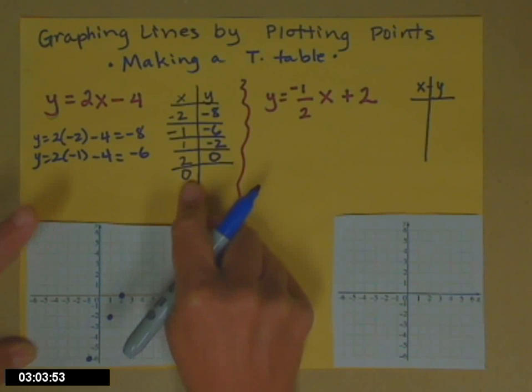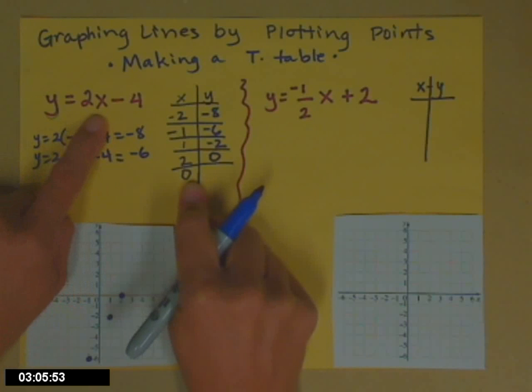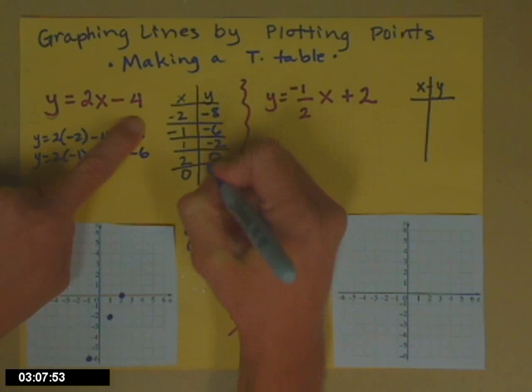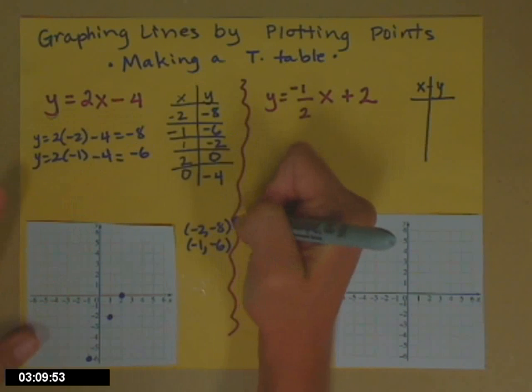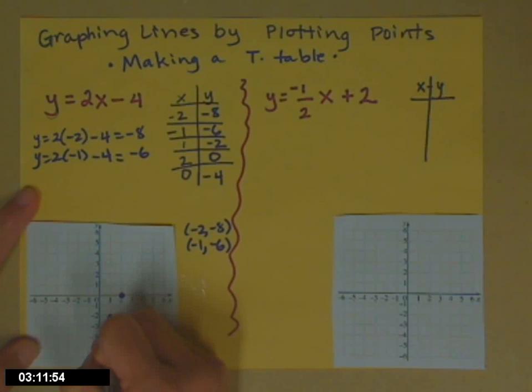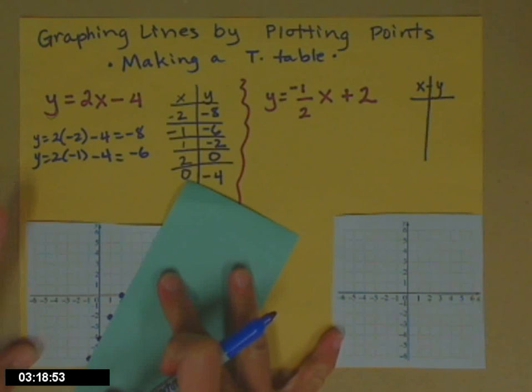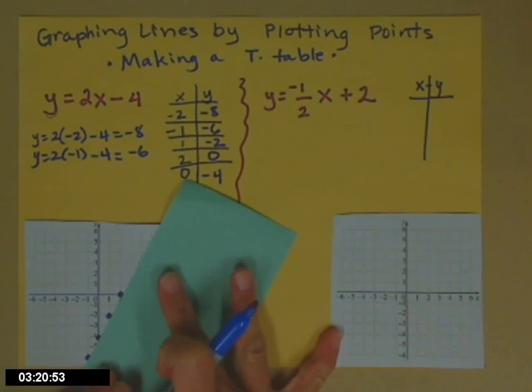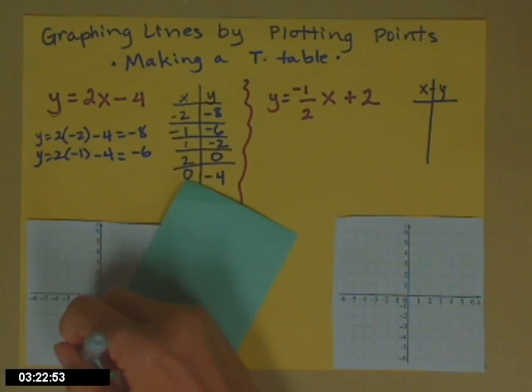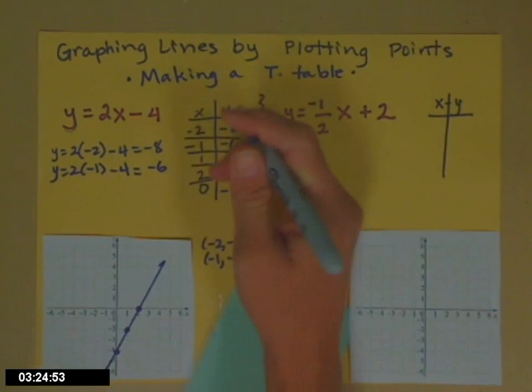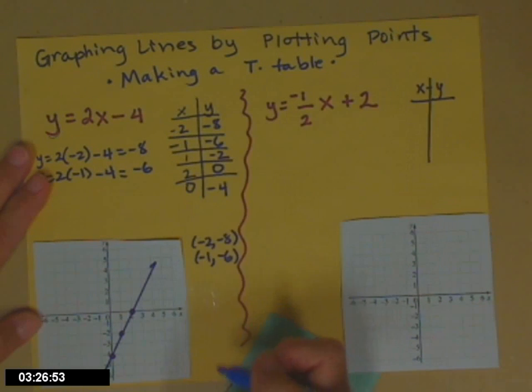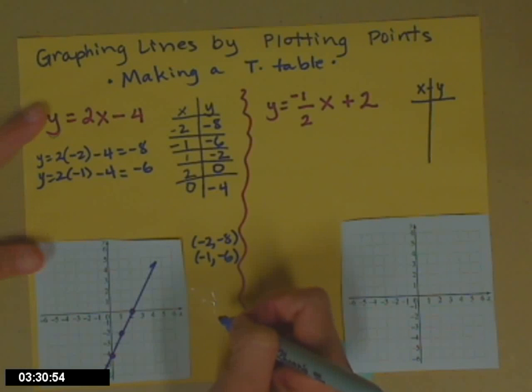And if x is 0, 2 times 0 is 0, minus 4 is negative 4. So we're filling in that dot in between. Now this graph goes on in both directions. So go ahead and line them up. Look, they all line up nicely. And connect them. So we only found 5 points. But every other point on that line is a solution to that equation.